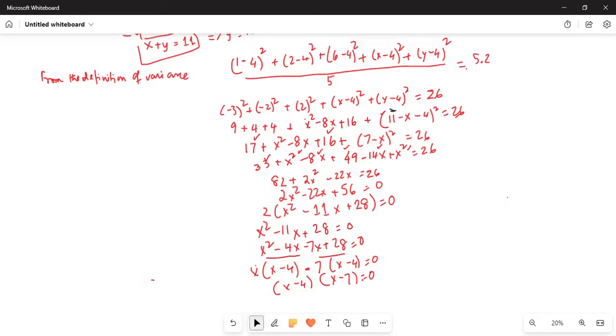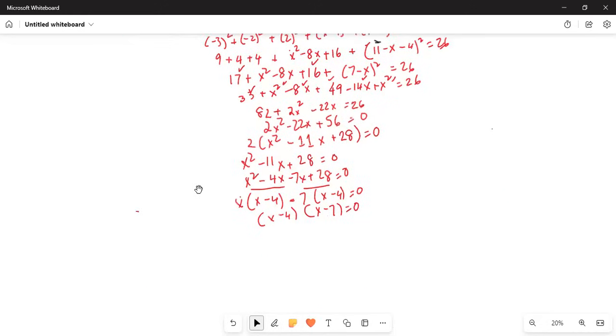So either x minus 4 is 0 which leads to x is equal to 4 or x minus 7 is 0 which leads to x is equal to 7.